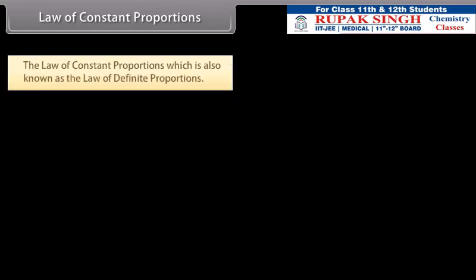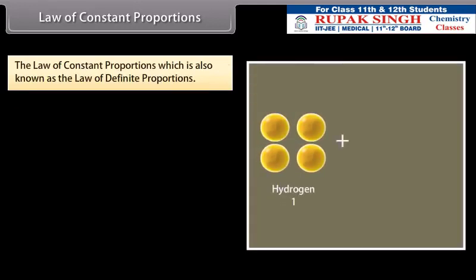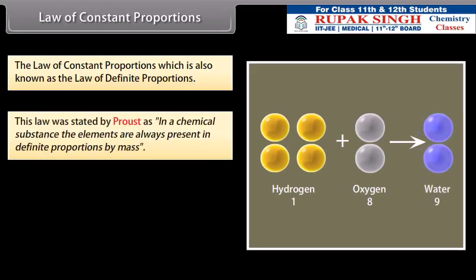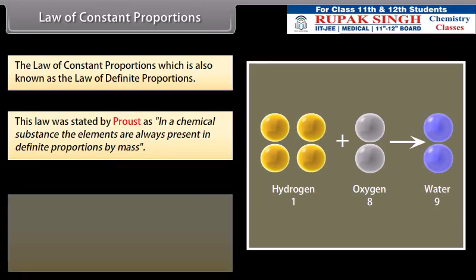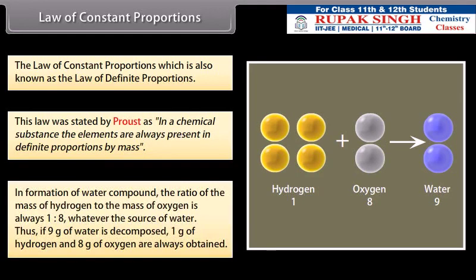Law of constant proportions, which is also known as the law of definite proportions. This law was stated by Proust. In a chemical substance, the elements are always present in definite proportions by mass. In formation of water compound, the ratio of the mass of hydrogen to the mass of oxygen is always 1 is to 8, whatever the source of water. Thus, if 9 gram of water is decomposed, 1 gram of hydrogen and 8 gram of oxygen are always obtained.